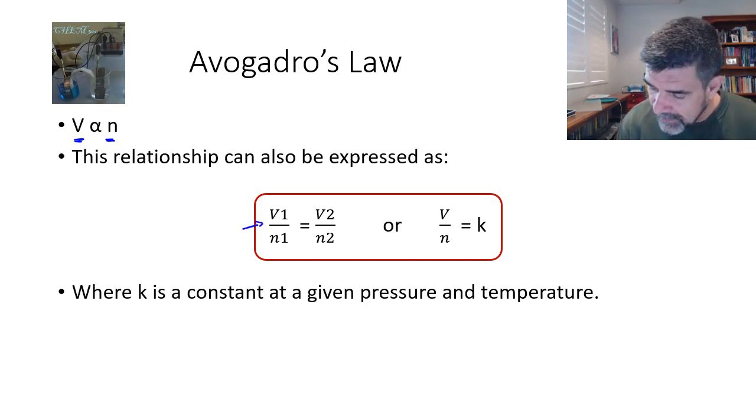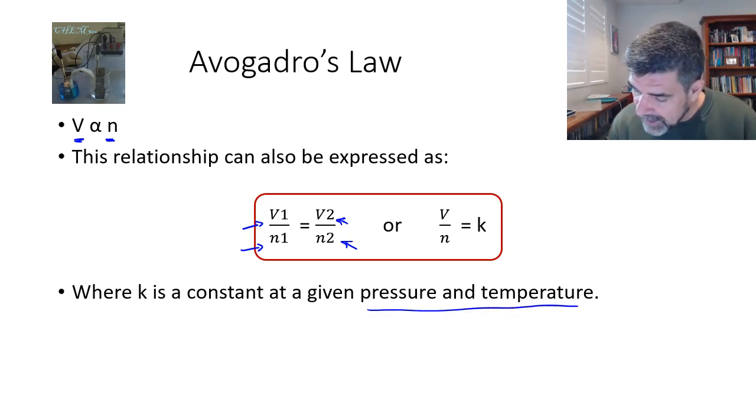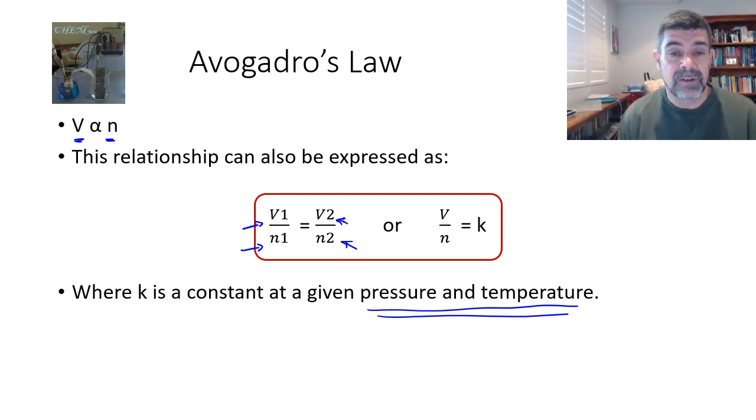In this case, V1 and n1 are the initial conditions, so the initial number of moles and the initial volume. And V2 and n2 is the final number of moles and the final volume. Now, this is again relying on the fact that the relationship between these two variables must occur at a given pressure and temperature.